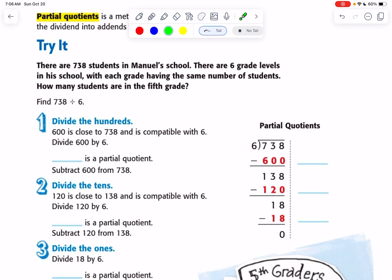So let's read the problem. There are 738 students in Manuel's school. There are 6 grade levels in his school, with each grade having the same number of students. How many students are in 5th grade? So if we divide all the 738 students by the 6 grades, we will get the number in each grade, which happens to be equal.